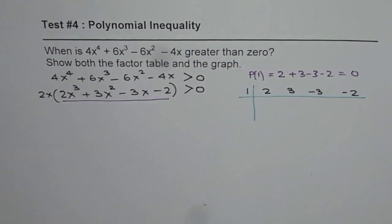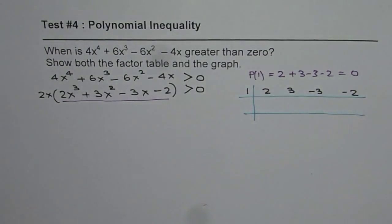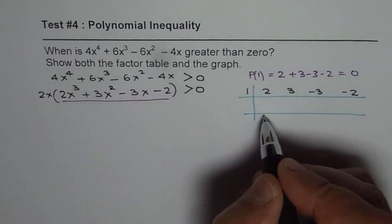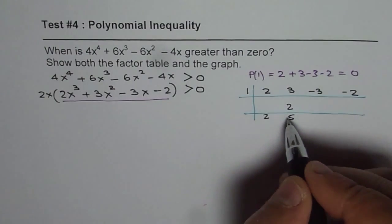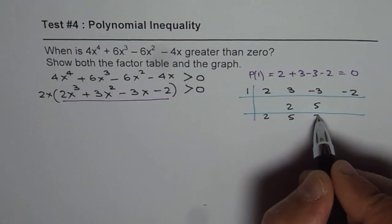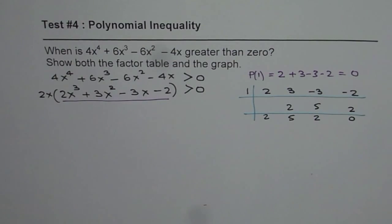We need to divide by 1. So what do we get? Bring down 2, multiply by 2, add them 5, multiply and write. So you get 2 here, multiply and write and as expected we get a 0, perfect.